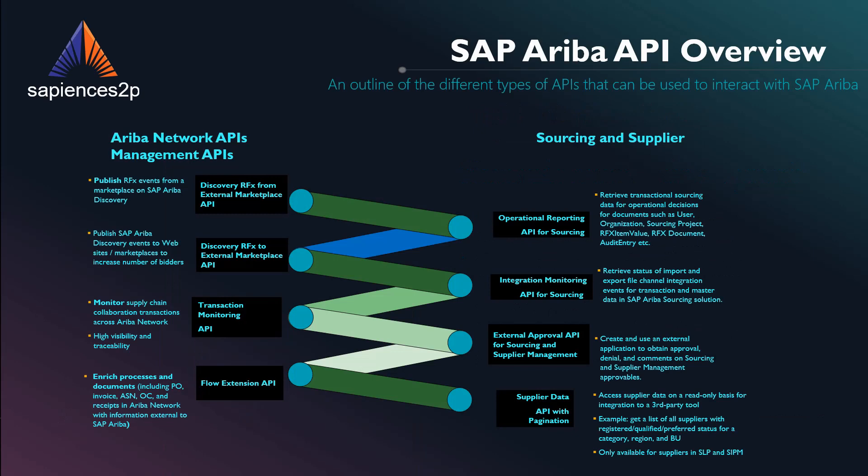Ariba APIs fall into a few broad categories. Ariba network APIs and management APIs publish data to websites and marketplace tools like Ariba Discovery, monitor network-wide transactions, and enrich processes and documents. Sourcing and supplier APIs retrieve transactional sourcing data and pass supplier data to third-party tools, amongst other things.